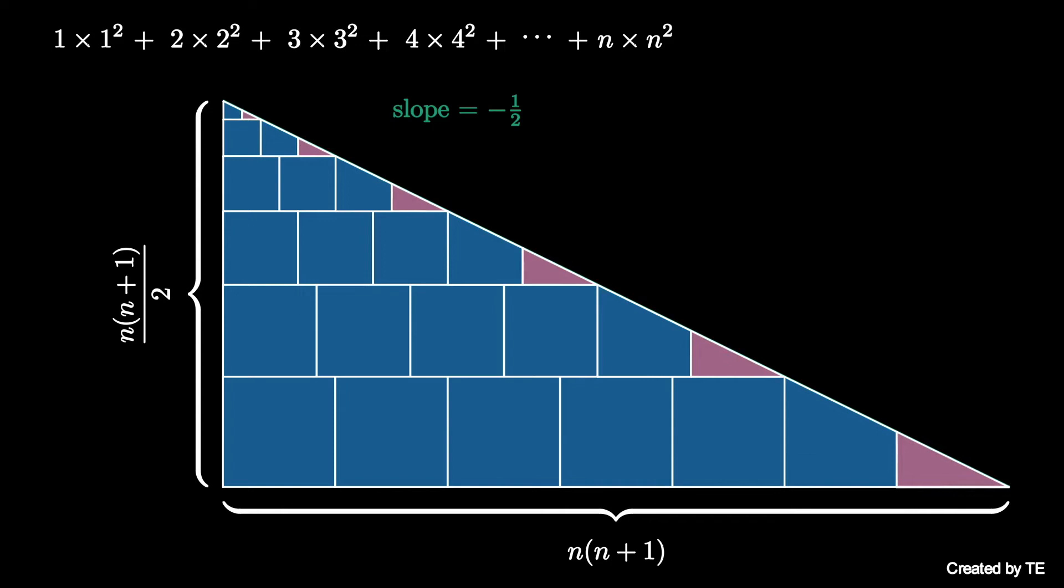Therefore, the area of the original array is (1/2) × [n(n+1)/2] × n(n+1), which is the area of the triangle.